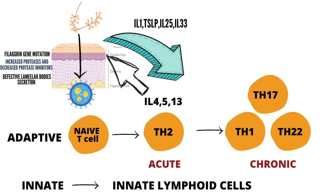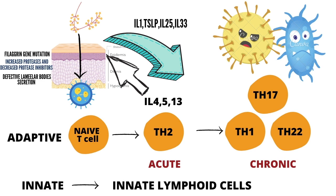The cutaneous microbiome represents a complex and diverse community of pathogenic and commensal bacteria, fungi, and viruses critical for epidermal homeostasis. More than 90% of patients with atopic dermatitis have skin colonized with Staphylococcus aureus, compared to about 5% of unaffected patients. During a flare, bacterial diversity decreases and the proportion contributed by staphylococcus species increases from 35% to 90%. Superantigens secreted by staphylococcus promote TH2 response, and exotoxins with superantigen properties are produced in up to 65% of colonizing staph aureus strains.